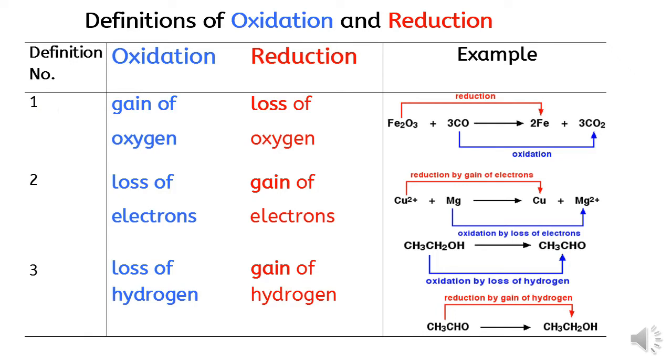oxygen transfer. Oxidation is gain of oxygen, while reduction is loss of oxygen. For example, Fe2O3 converts to Fe.